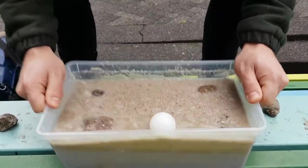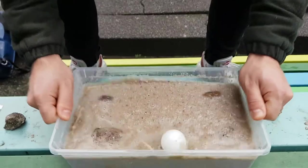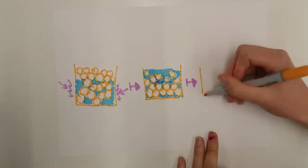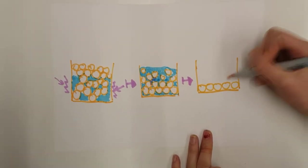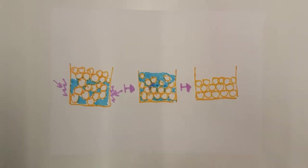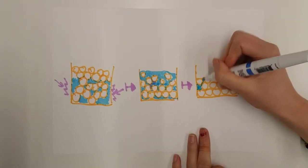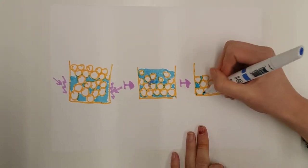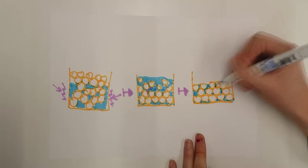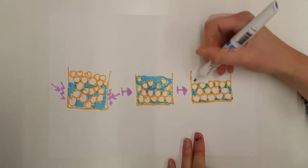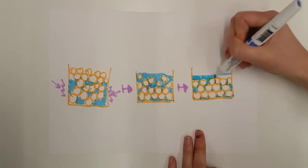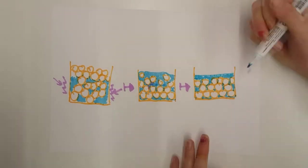The ping pong ball floats and the stones sink. After the repeated stress has stopped, the grains reorganize and become more compact, packed more densely, and behave like a solid again. There is less space for water between the grains, so the water stays mostly on top of the sand.